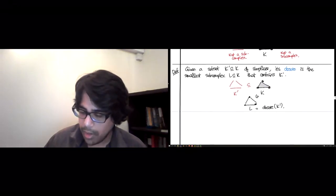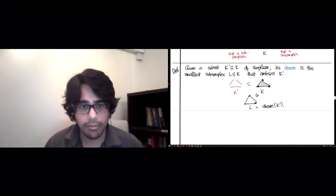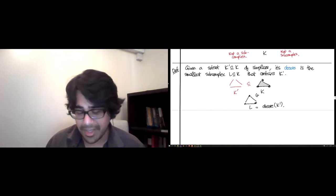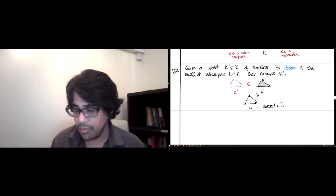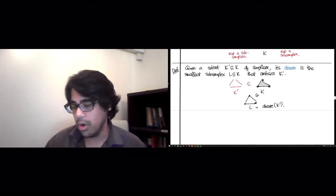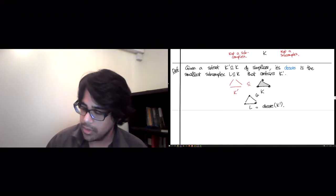Now the final definition of this lecture is the notion of a filtration, which is what you get if you have a string of subcomplexes starting from something tiny going all the way up to K. So let's define that.